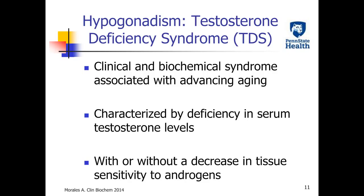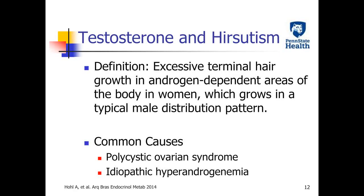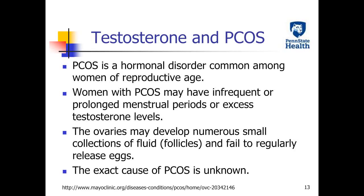Hypogonadism is also known as testosterone deficiency syndrome. It is a clinical and biochemical syndrome associated with men with advancing aging. Those patients have decreased serum testosterone levels, and they may or may not have a decrease in tissue sensitivity to testosterone. Hirsutism is due to increased testosterone levels causing excessive terminal hair growth in androgen-dependent areas of the body in women.